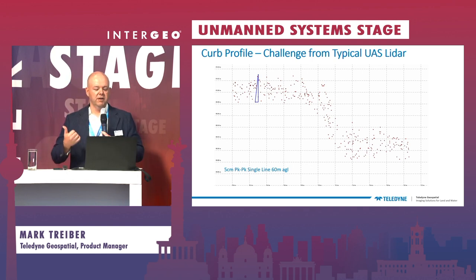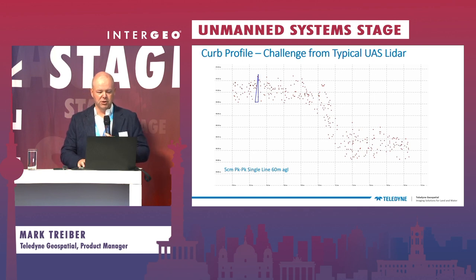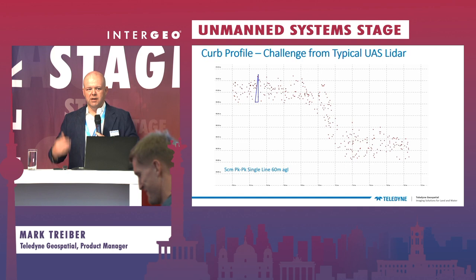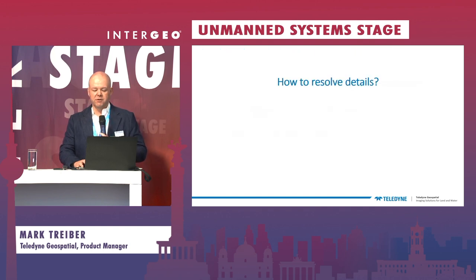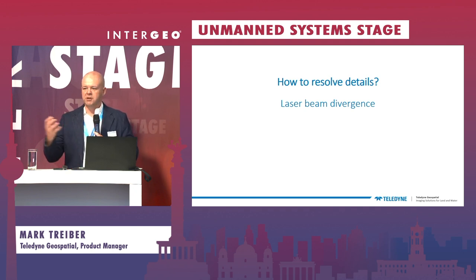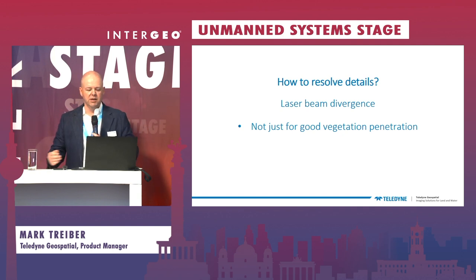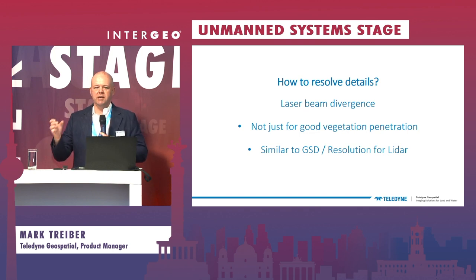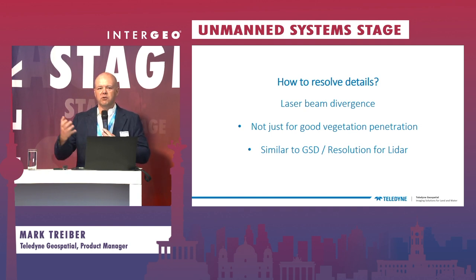What are the reasons for that? It's a combination of beam divergence, the ranging precision of the systems, and the accuracy of the systems. I'm going to focus on one aspect: beam divergence is sort of analogous to GSD for people familiar with photogrammetry methods. It's a way to measure what is the resolution of that LiDAR point on the ground, because often people think they've got great density, but density doesn't necessarily equate to resolution when you're looking for those fine features.